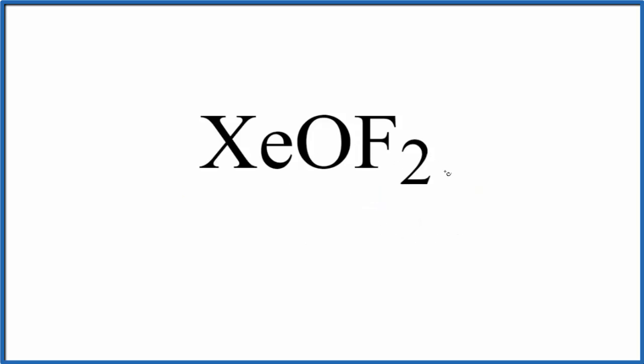So first off, let's count our valence electrons. Xenon, that's in group 18, sometimes called 8A. It has 8 valence electrons. Oxygen has 6. Fluorine has 7, but we have 2 fluorines. So we add this all up and we get 28 total valence electrons for the XeOF2 Lewis structure.